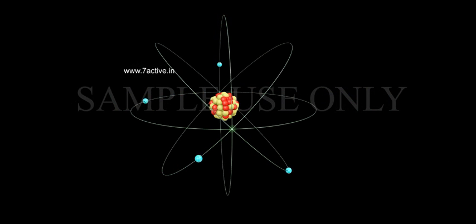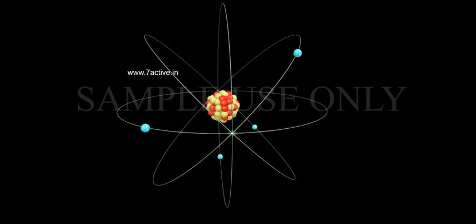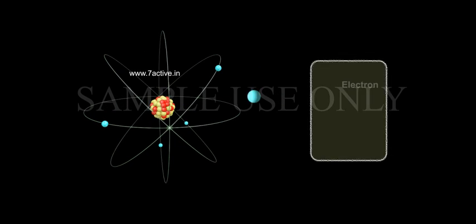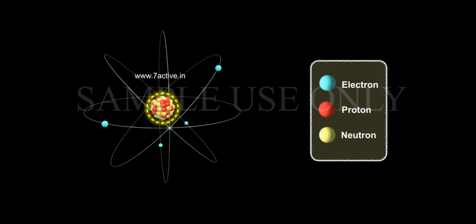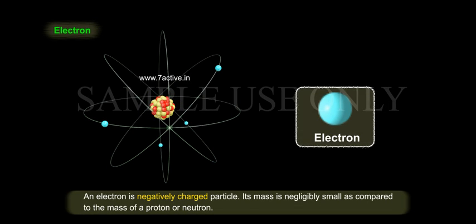So, atoms consist of three fundamental particles. They are: 1. Electron, 2. Proton, 3. Neutron. Electron. An electron is negatively charged particle.